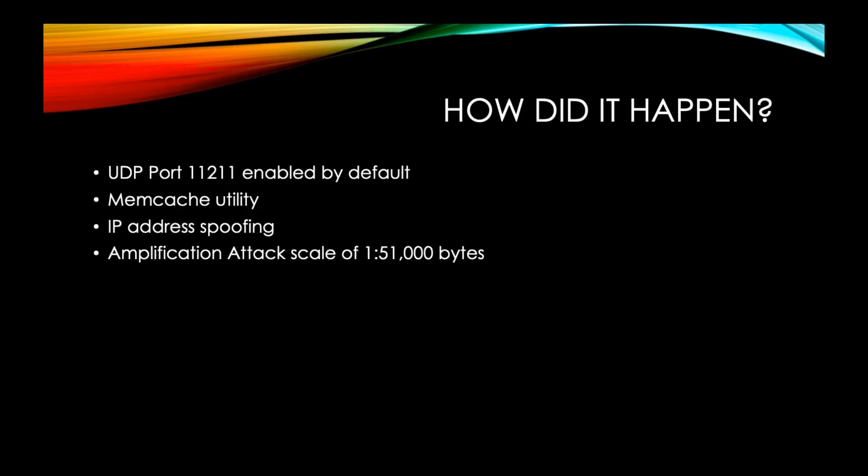So how did the attacker pull this off? This attack is categorized as an amplification attack vector. Its primary techniques include IP address spoofing, autonomous submission of requests to identify public memcache servers, and exploitation of the default UDP-enabled configuration that came along with the installation of the memcache utility.